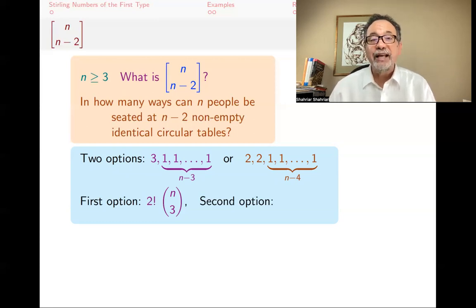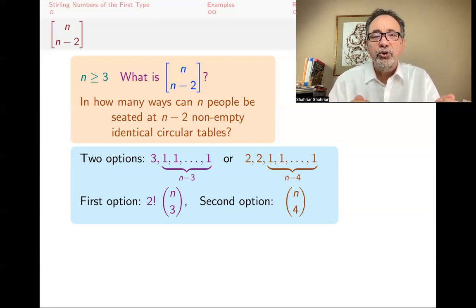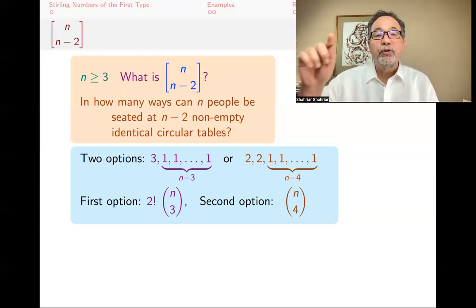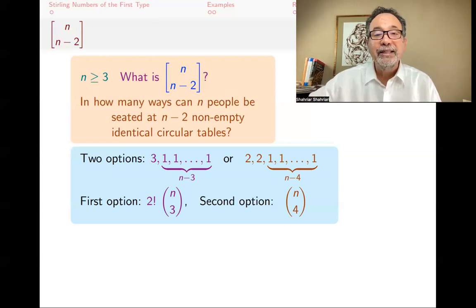But what about the second option? The second option is that you've got two people and two people. Well, first you pick the four people that are going to be in that 2-2 configuration. Then you have to decide how to split them into two groups. Because as soon as you split them into two groups, then one table, then there's no more choice. They just sit at that table. It doesn't matter how they sit. It's a circular table. For two people, there's only one way. And how do you split four people into two teams? Well, you pick your favorite person among the four people, and you tell them, pick a teammate. And that person will say, well, I have three choices. As soon as that person makes a choice, you're done. You have split the group into two. So there's only three choices.